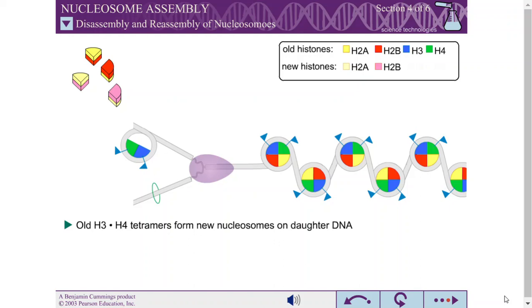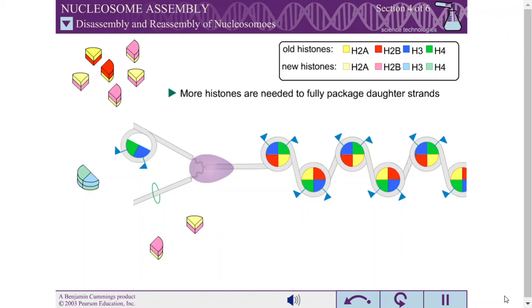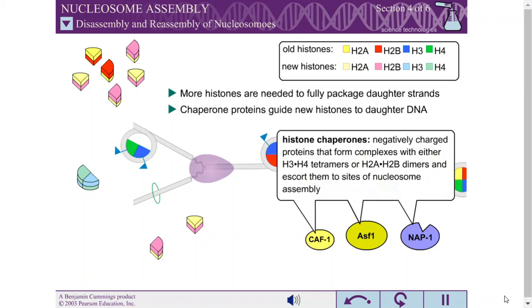Because the amount of DNA has doubled, more histones are needed to fully package the two daughter strands into nucleosomes. These newly synthesized histones do not spontaneously form nucleosomes with DNA in the cell. Instead, histone chaperones guide these new histones to the DNA behind the replication fork.